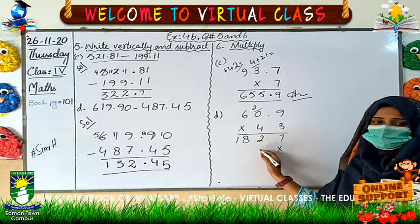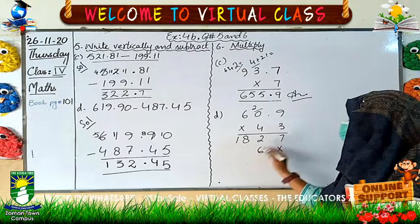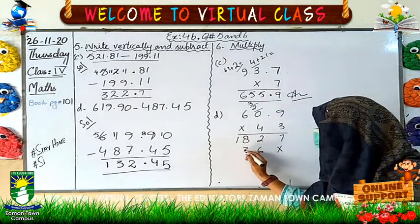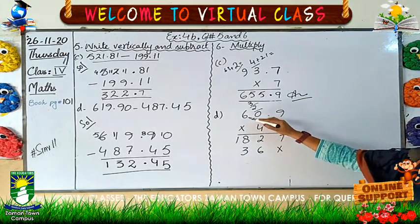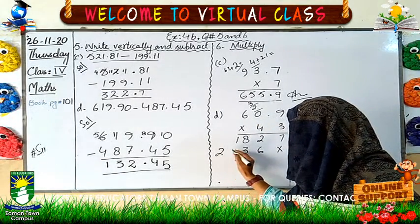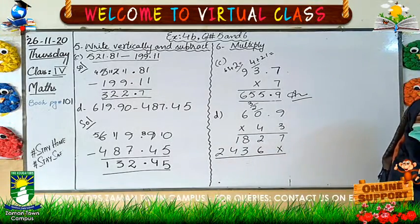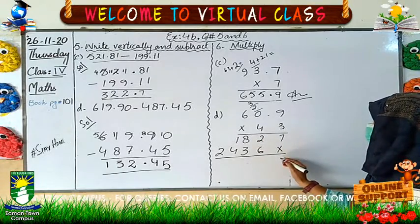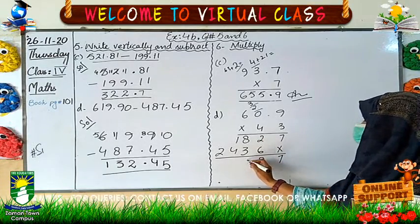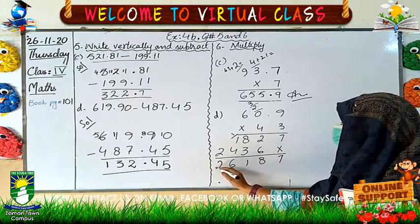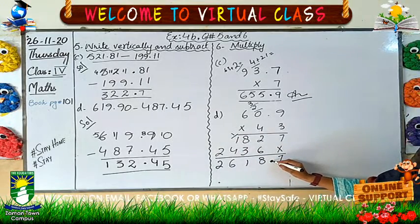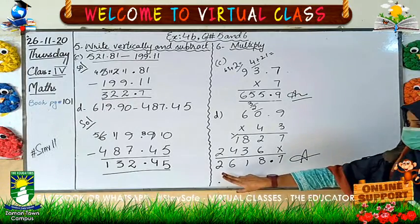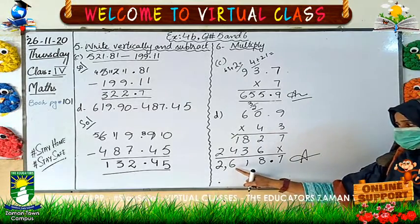4 nines are 36. 6 is here and 3 is my carry. 4 zeros are zero, so I write my carry. 4 sixes are 24. That is not enough — I have got my partial products but I have to add both of them. 7, 8, 11 — here I also have a carry. 6 and 2. At last, in the answer I have to place my decimal point. When I multiplied 60.9 with 43, I got my answer 2618.7.